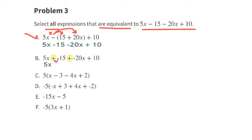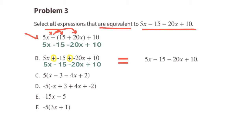Option B: 5x plus a negative 15 is the same thing as 5x and a negative 15, or 5x minus 15, plus a negative 20x — that's the same as minus 20x. Bring down the plus 10, and now the expression reads 5x minus 15 minus 20x plus 10, which is equivalent to the original expression.